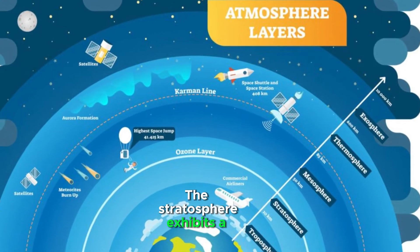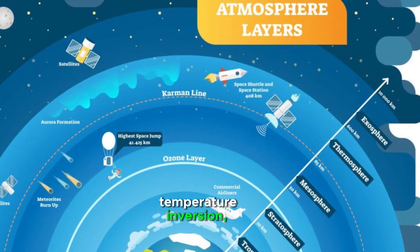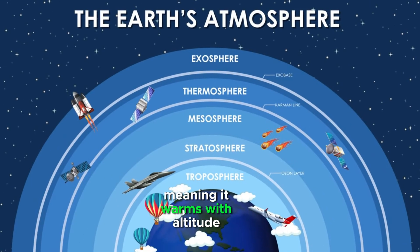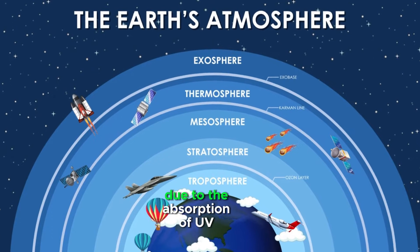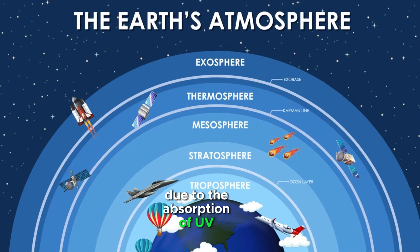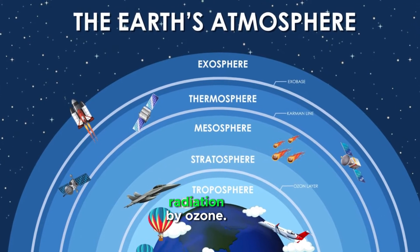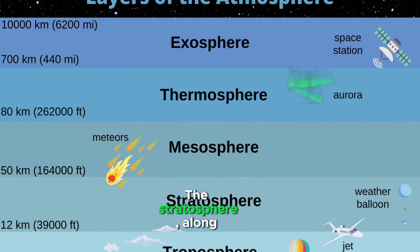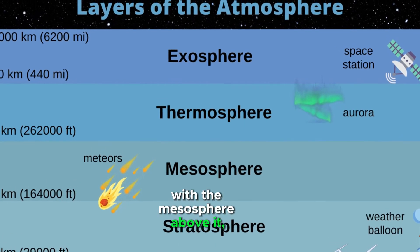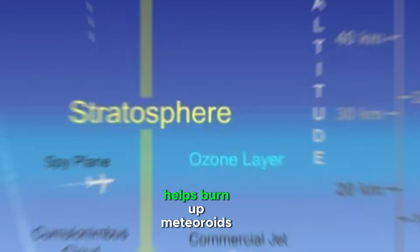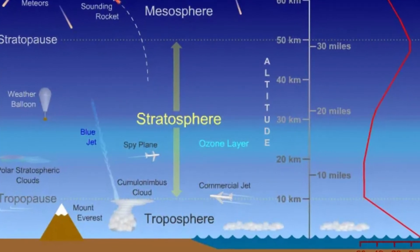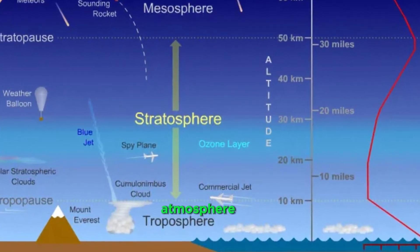The stratosphere exhibits a temperature inversion, meaning it warms with altitude due to the absorption of UV radiation by ozone. The stratosphere, along with the mesosphere above it, helps burn up meteoroids as they enter Earth's atmosphere.